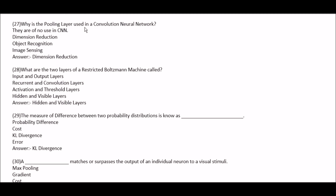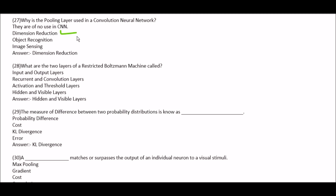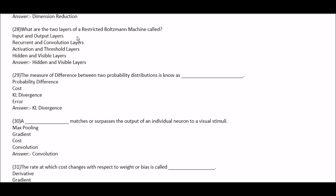Why is the pooling layer used in a convolution neural network? Option A: they are of no use in CNN. Option B: dimensional reduction. Option C: object recognition. Option D: image sensing. Right answer is dimensional reduction. Next question: what are the two layers of a restricted Boltzmann machine called? Option A: input and output layer. Option B: recurrent and convolution layers. Option C: activation and threshold layers. Option D: hidden and visible layers. Right answer is hidden and visible layers.